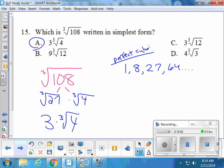So which of these numbers will divide into 108? 27. So 108 is going to be written as the cube root of 27 times the cube root of 4. Because 27 times 4 is 108. So it's 3 cube roots of 4.